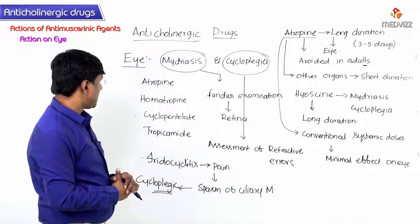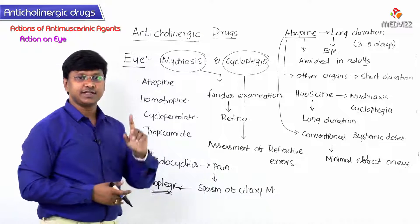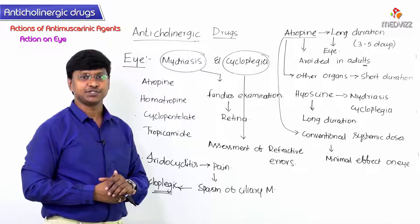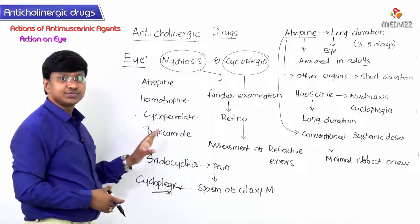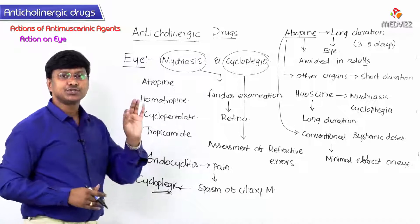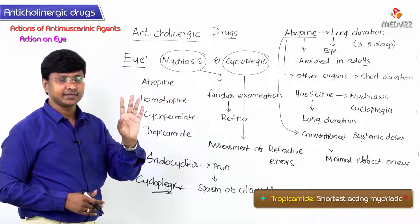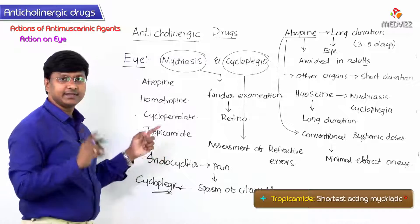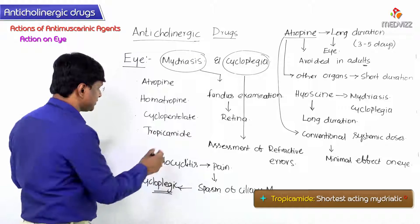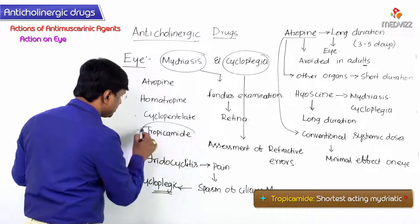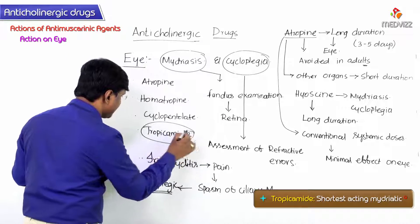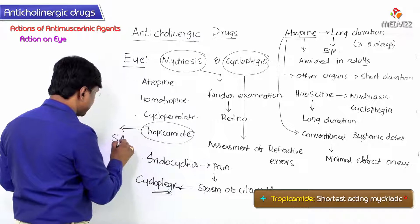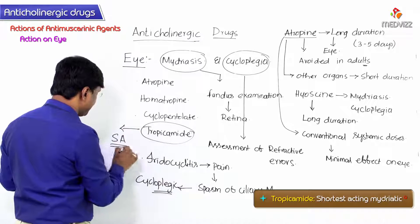Among all these drugs, an important point — especially for multiple choice questions — is that the shortest acting mydriatic is tropicamide. Remember, tropicamide is the shortest acting mydriatic.